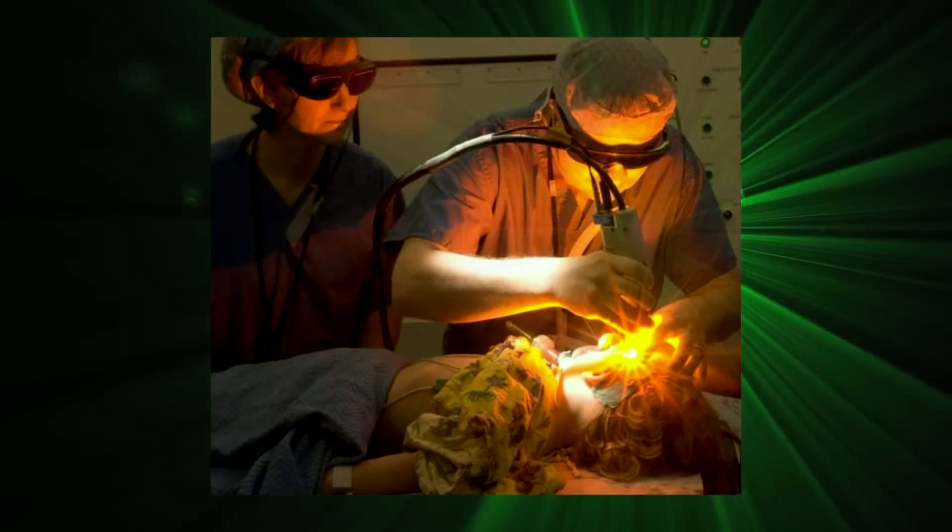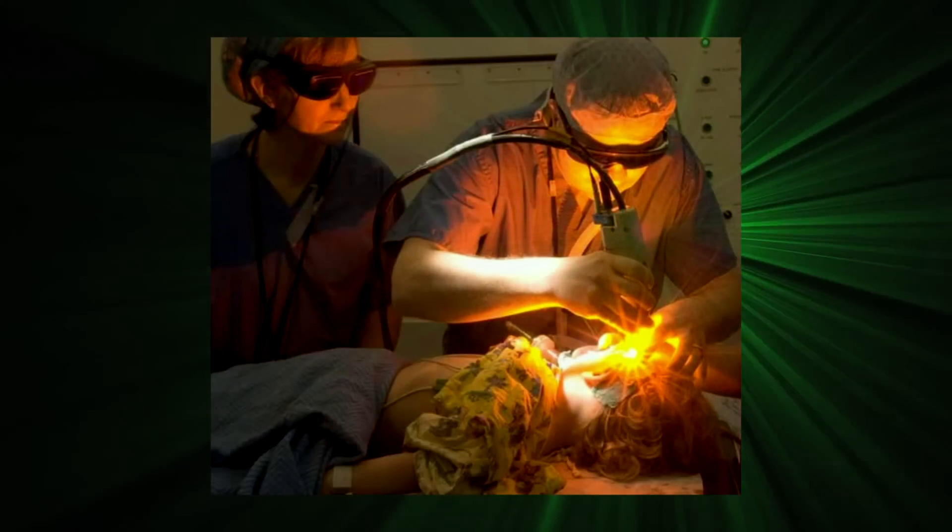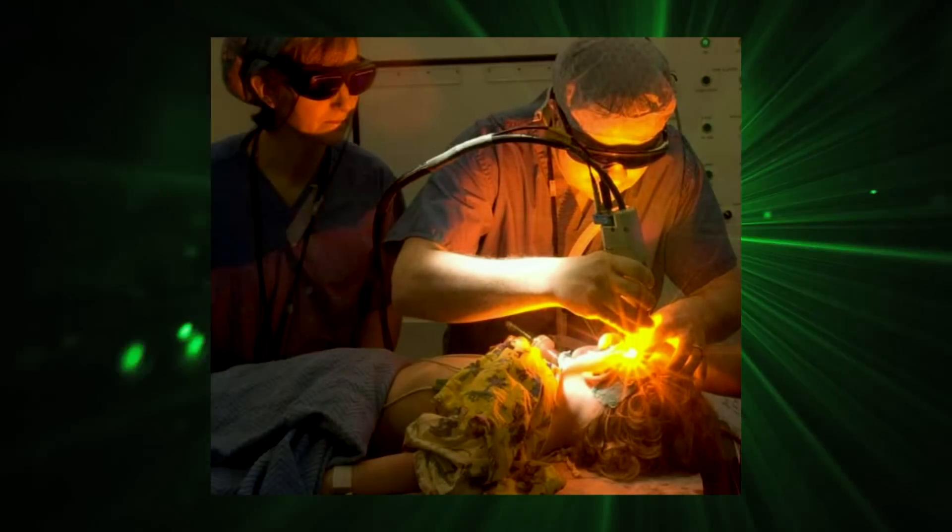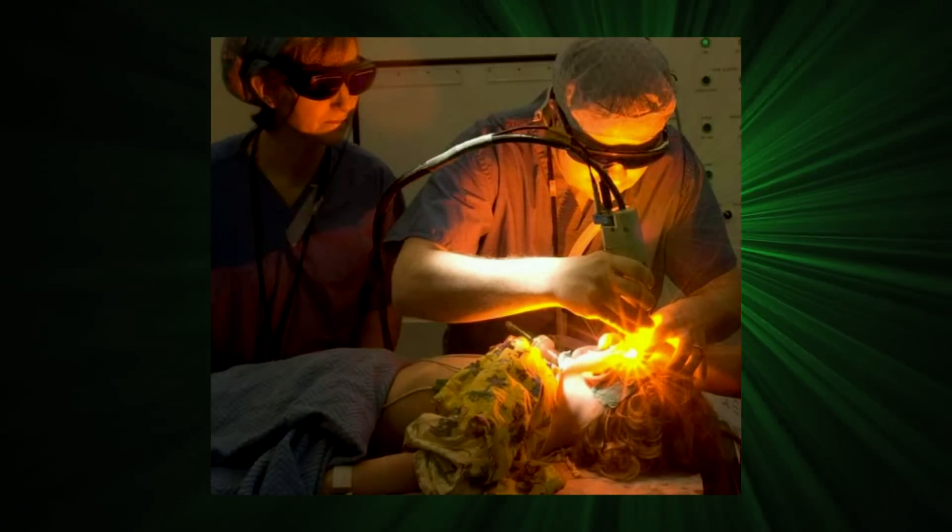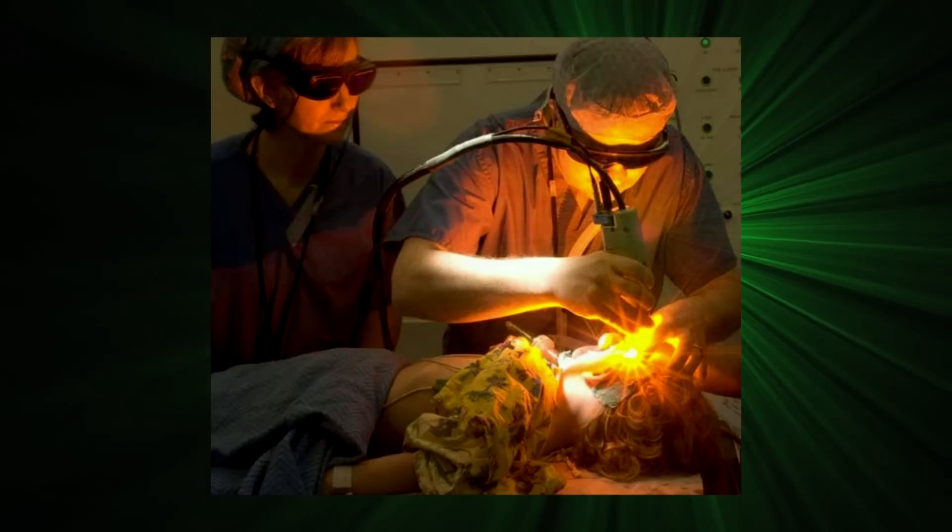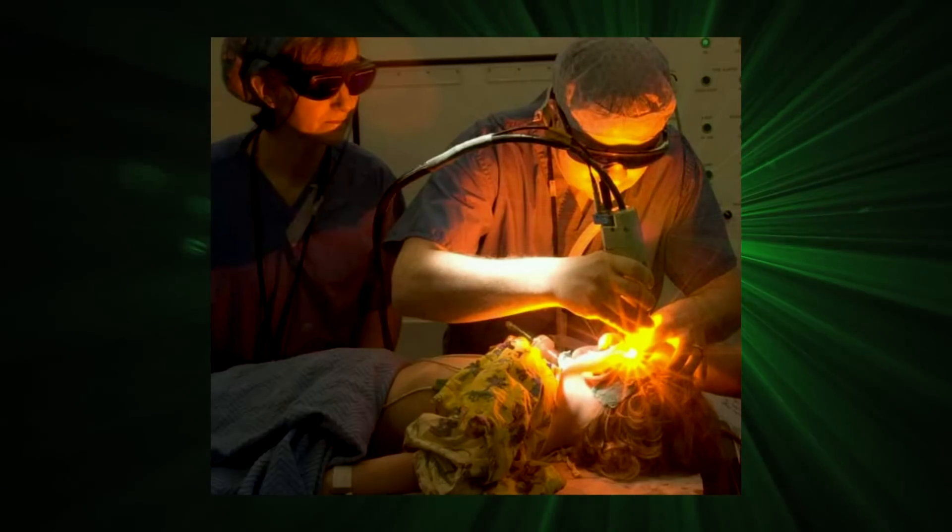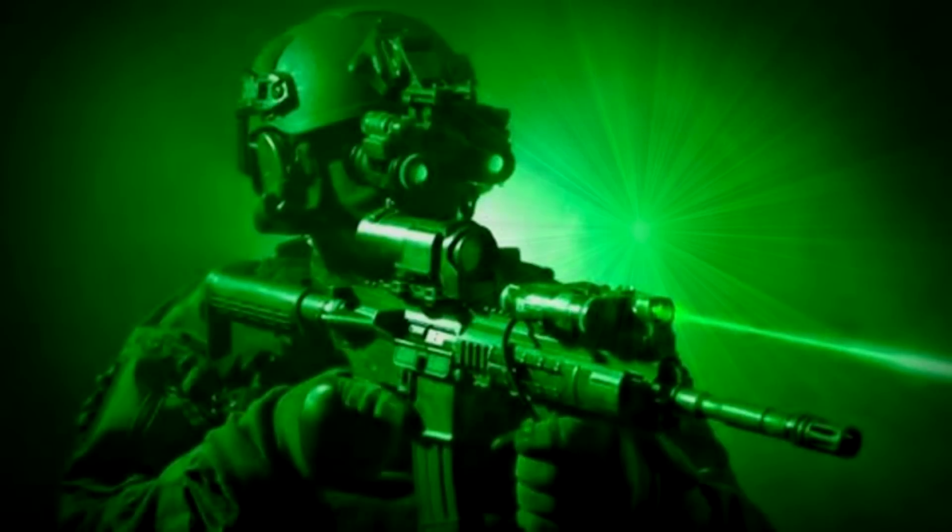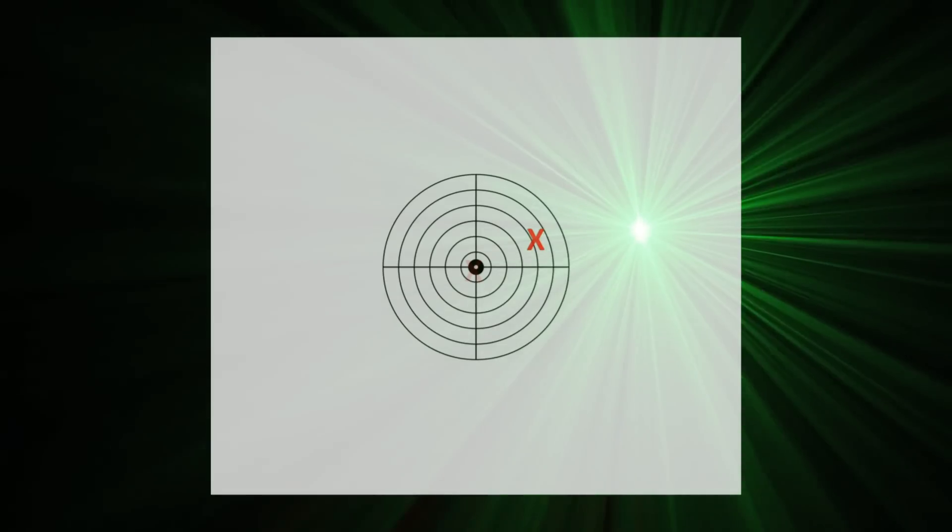When using a laser beam in a real-world application, such as a medical application, you obviously want to be sure the beam arrives at the target. If the laser beam happens to be invisible though, say an infrared beam, aiming it is not a simple matter. The usual solution is to use a visible aiming beam, and then to set things up so that the application beam goes exactly where the aiming beam goes, or to align the two beams. How do you do that?